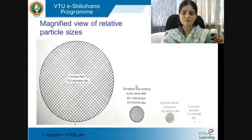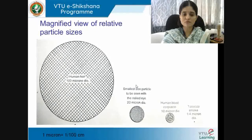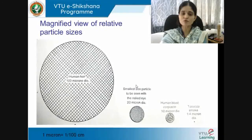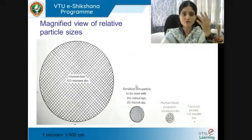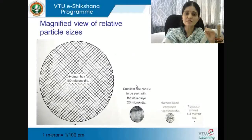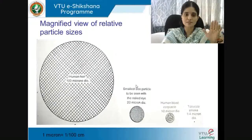To get a perspective on relative sizes of impurities: human hair is 100 microns; one micron is approximately one hundredth of a centimeter or 1/25,000th of an inch; the smallest particle visible to the naked eye is around 20 microns; a human blood corpuscle is 10 microns; tobacco smoke is one-quarter of a micron; viruses are much below that. The AC filtration system must be adapted to remove whatever is required for that particular space and building.